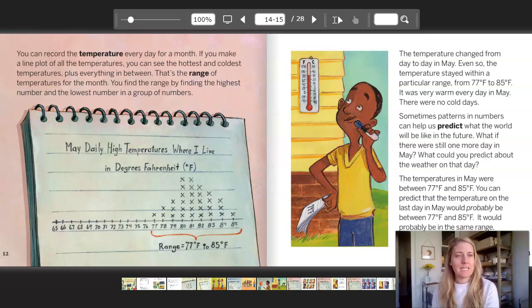The temperature changed from day to day in May. Even so, the temperature stayed within a particular range, from 77 degrees Fahrenheit to 85 degrees Fahrenheit. It was very warm every day in May. There were no cold days. Sometimes patterns and numbers can help us predict what the world would be like in the future. What if there were still one more day in May? What could you predict about the weather on that day? The temperatures in May were between 77 and 85 degrees. You can predict that the temperature on the last day in May would probably be between 77 and 85 degrees. It would probably be in the same range.